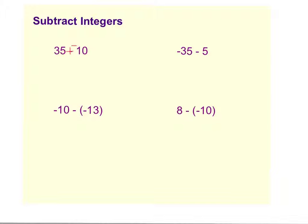35 minus 10 is 25. And then keep the sign of the bigger number which is a 35, so we have a positive 25. So we did add op on that one.